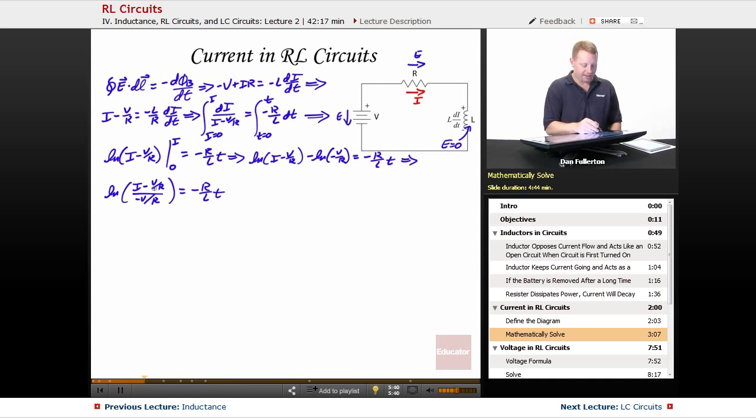Once again this natural log is pestering me. So let's raise everything, E raised to those powers on both sides so that we can get rid of our natural log. And we can write the left hand side as (I minus V/R) divided by (minus V/R) must be equal to E to the minus R over L times T.